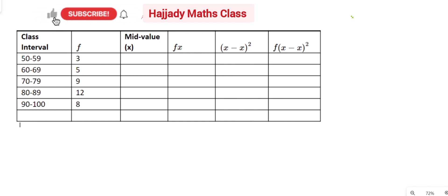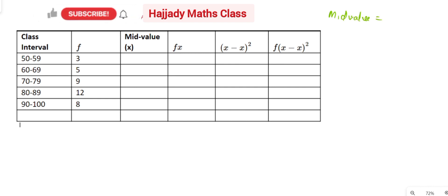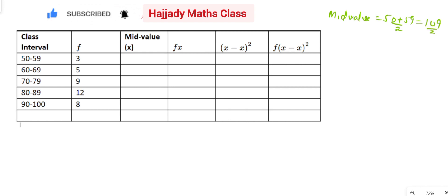The first thing we need to do is to get the middle value. Since our class interval is 50 to 59, our mid value will be equal to the average of the two — that is, 50 plus 59 over 2. 50 plus 59 gives us 109 over 2, which is the same as 54.5. So our mid value here is 54.5.